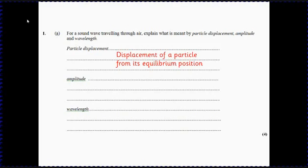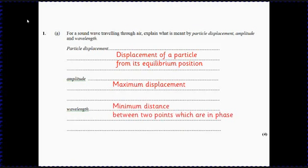From its equilibrium position. The equilibrium position is the crucial thing there. Obviously it can be forwards or backwards if it's a sound wave. The amplitude, once we've described what a displacement is, all we need to say is it's the maximum displacement.